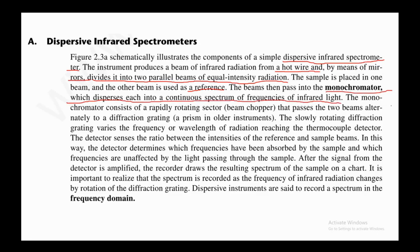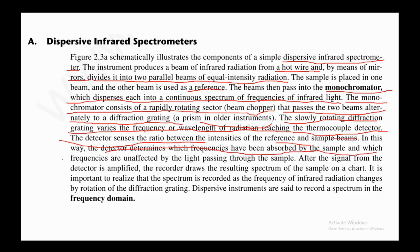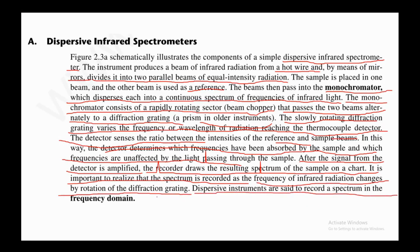The beams then pass into a monochromator, which disperses each into a continuous spectrum of infrared light frequencies. The monochromator consists of a rapidly rotating sector called a beam chopper that passes the two beams alternately to a diffraction grating. The slowly rotating diffraction grating varies the frequency of radiation reaching the thermocouple detector. The detector senses the ratio between the intensities of the reference and sample beams, determining which frequencies have been absorbed by the sample. After the signal is amplified, the recorder draws the resulting spectrum. Dispersive instruments are said to record a spectrum in the frequency domain.